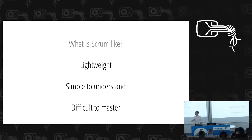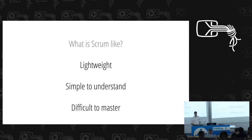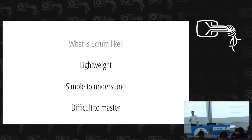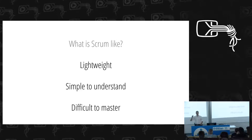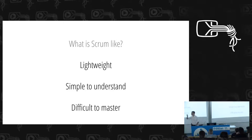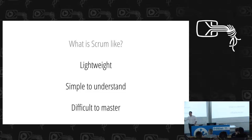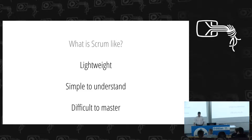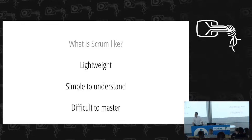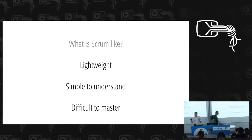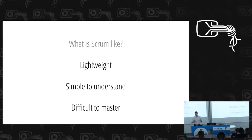Scrum is said to be lightweight, simple to understand, but difficult to master. I think that is actually a stroke of genius, because what the authors managed to put into the very definition of their method is the possibility of you, me, and everyone else simply being too stupid to do it — because remember, difficult to master, so maybe you're just incompetent and you're doing it wrong. Lightweight and simple to understand basically means: we're not actually defining a whole lot, but at least we're describing that in simple terms.